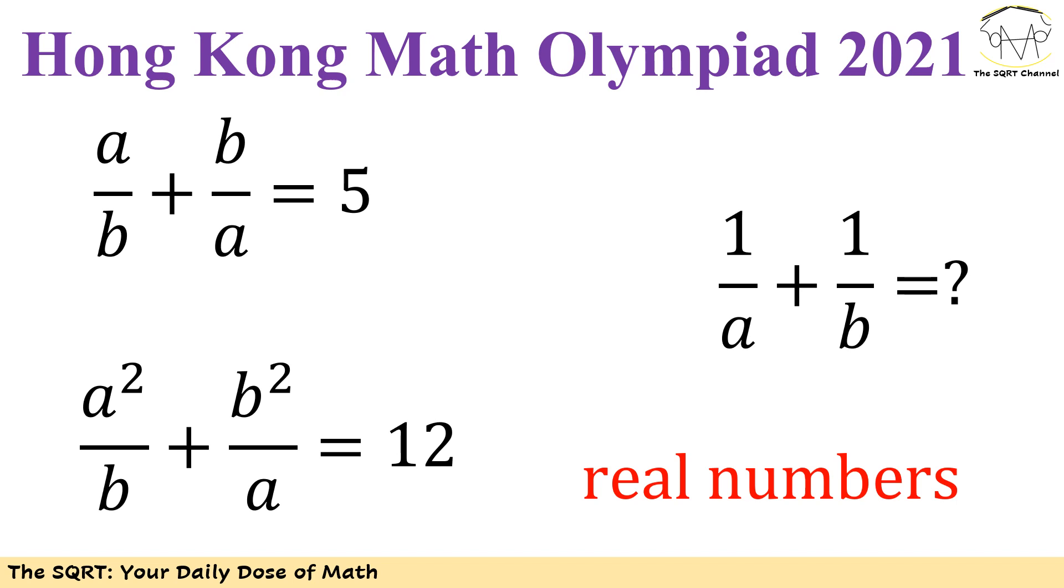In this problem I have two equations: a/b + b/a = 5, and a²/b + b²/a = 12. I'm going to find 1/a + 1/b. We know that a and b are real numbers and none of them is zero.